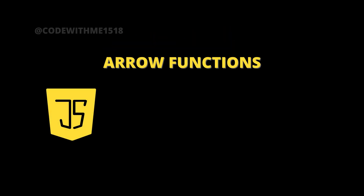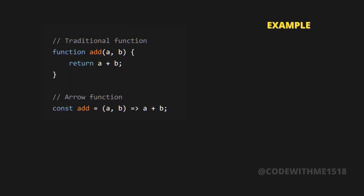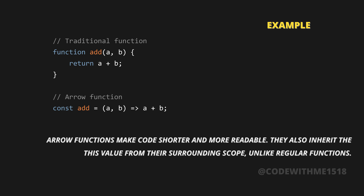Arrow functions provide a more concise way to write functions in JavaScript. For example, a traditional function: function add(a, b) { return a + b; }. As an arrow function: const add = (a, b) => a + b. Arrow functions make code shorter and more readable. They also inherit the this value from their surrounding scope, unlike regular functions.